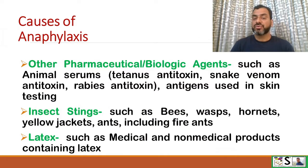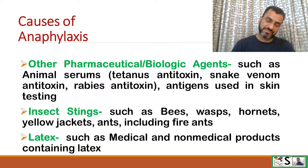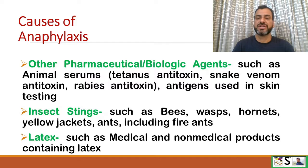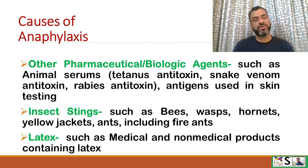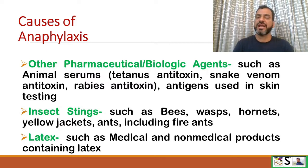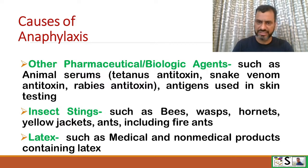Other pharmaceutical or biological agents that can cause anaphylaxis include animal serums such as tetanus toxoid, snake venom antitoxins, rabies antitoxins, and antigens used in skin testing.